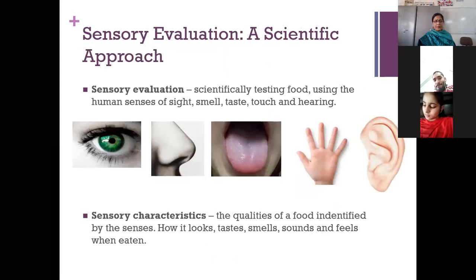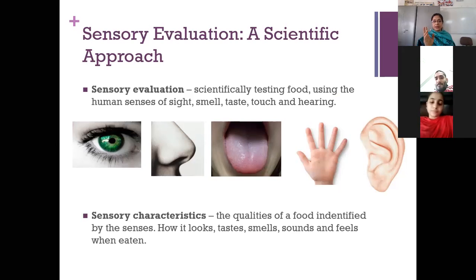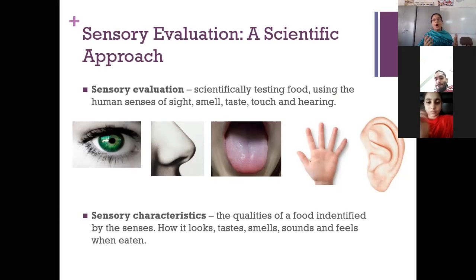If you talk about sensory evaluation scientifically, it means testing food, usually done by human senses of sight, smell, taste, touch, and hearing. The sensory characteristics — the qualities of a food — are identified by the senses: how it looks, how it tastes, how you get the smell of that food, the sounds and the feel when you eat that food.